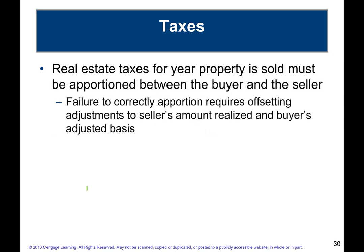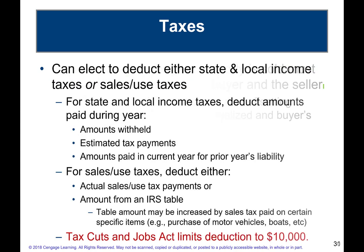Real estate property taxes for a year when the property is sold must be apportioned between the buyer and the seller. Even if the closing shows you paid all the property taxes for the full year, you can only deduct the portion for the time you actually owned the property. The difference would be considered a reduction in the sale price of the home.